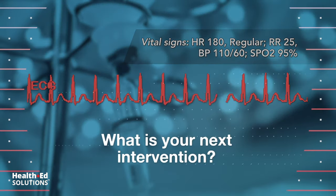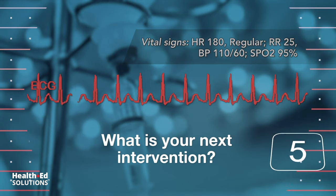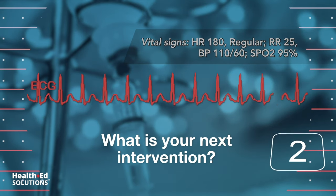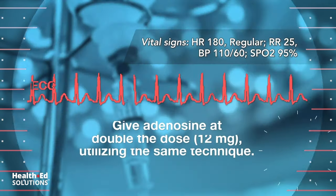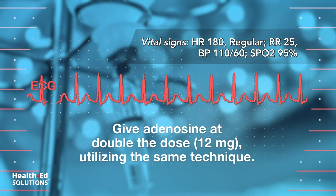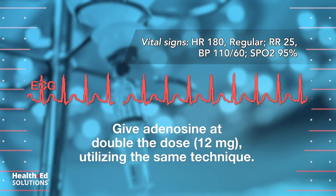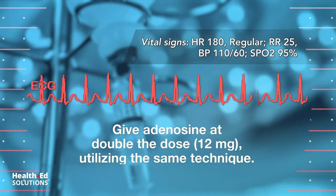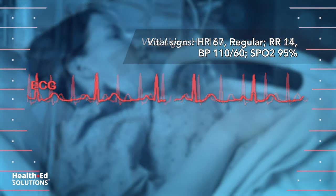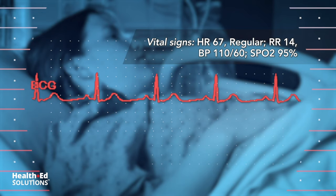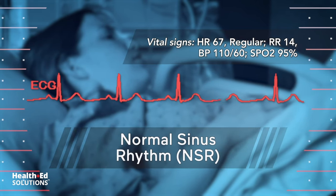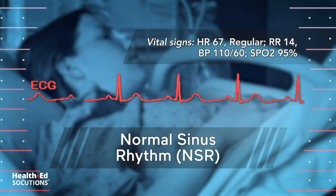What is your next intervention? Give adenosine at double the dose — 12 mg — utilizing the same technique. Following the second dose of adenosine, the cardiac monitor shows that the patient's rhythm has converted to normal sinus rhythm, NSR.